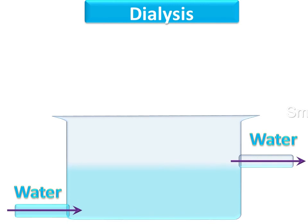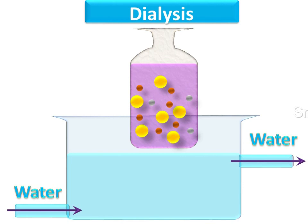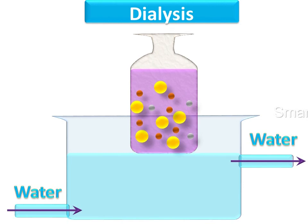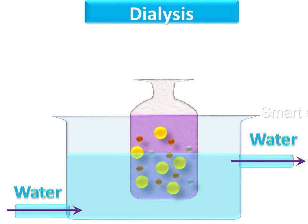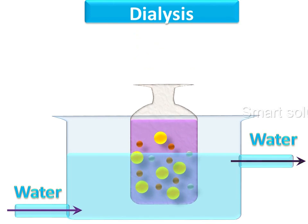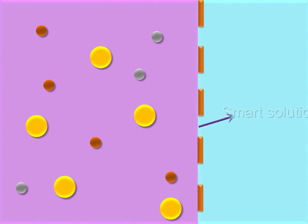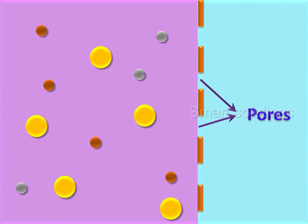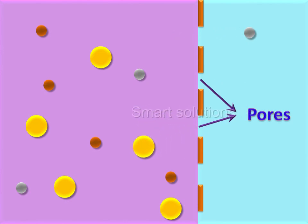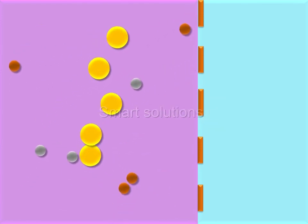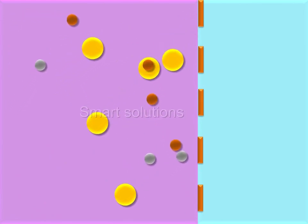A vessel where fresh water is continuously flowing. A membrane containing colloidal solution is suspended in the vessel. The membrane contains small pores. From these pores, small impurities and electrolytes get diffused from the solution to water, but large colloidal particles remain within the solution.